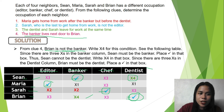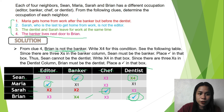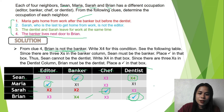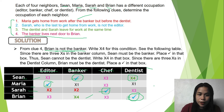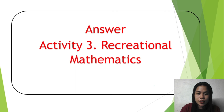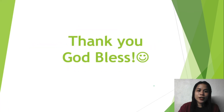From the following clues, we were able to determine the occupation of each neighbor — Sean, Maria, Sarah, and Brian. If you understand the problem and our solution, you may now answer Activity 3 on recreational mathematics. Thank you and God bless.